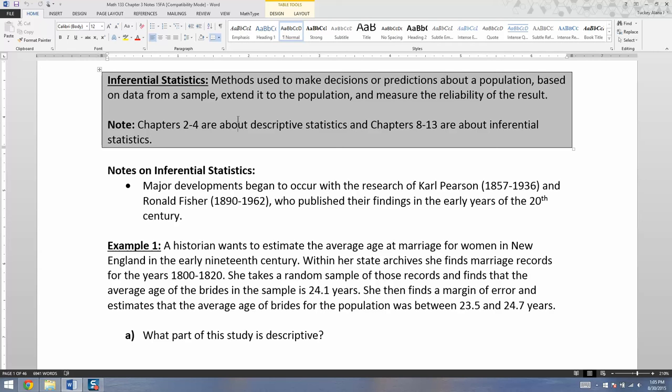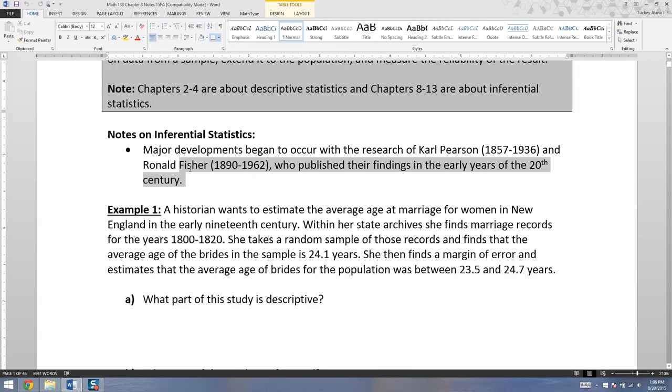The mathematics of future predictions is probability. And then we use that mathematics and the data from chapters two through four and combine them together to do chapters eight through thirteen, which means the course gets progressively more complex, not necessarily harder, just more complicated what's going on in later chapters, because you're using all the probability stuff from chapters five, six, and seven, as well as the descriptive statistics from two and three and four.